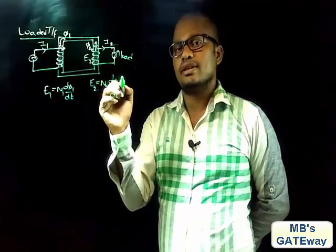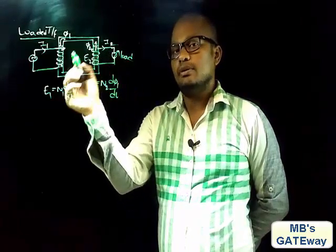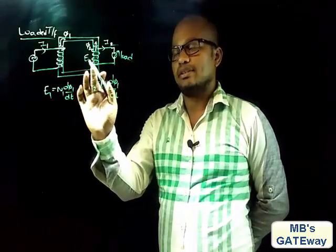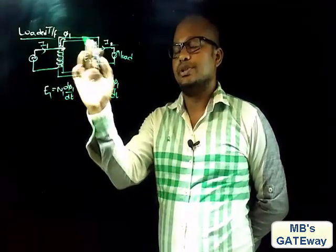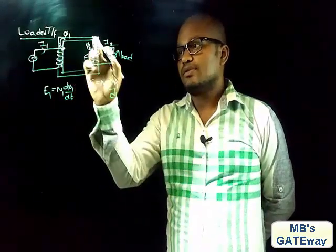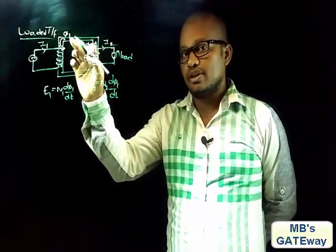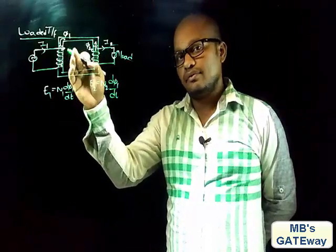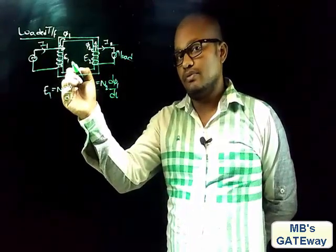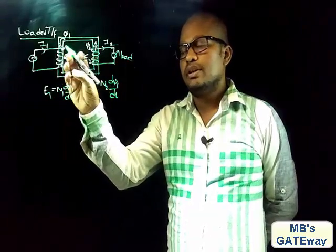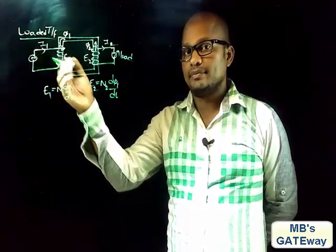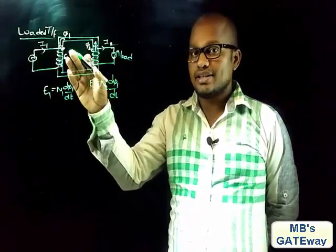Flux φ2 flows in the direction opposite to the primary flux φ1. Please keep in mind that the windings are wound such that φ1 and φ2 directions are opposite to each other. As φ2 is opposing φ1, there is a decrease in flux φ1, which will obviously decrease the induced EMF E1.